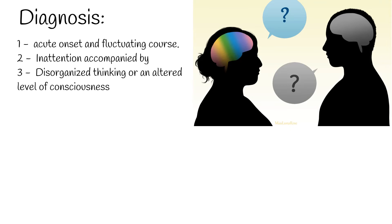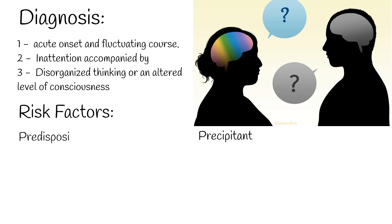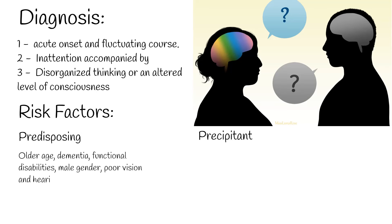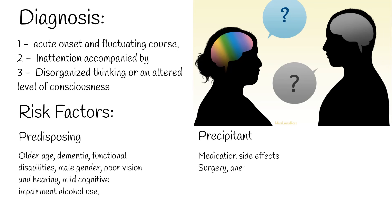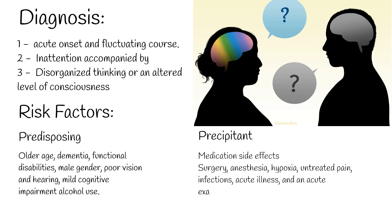There are two groups of risk factors related to delirium: predisposing and precipitant factors. Predisposing factors are older age (older than 70 years), dementia, functional disabilities, male gender, poor vision and hearing, and mild cognitive impairment and alcohol use. Precipitating factors include medication side effects, which account for up to 39% of delirium cases, as well as surgery, anesthesia, hypoxia, untreated pain, infections, acute illness, and acute exacerbation of chronic illness.